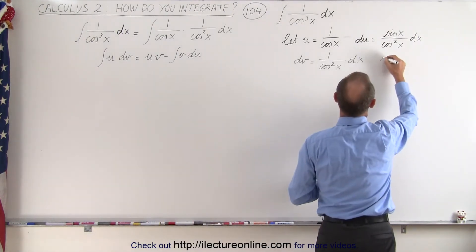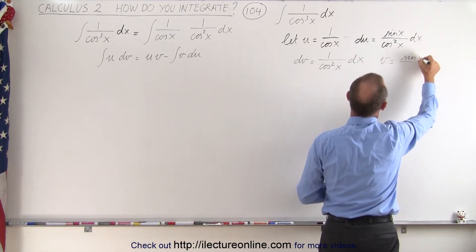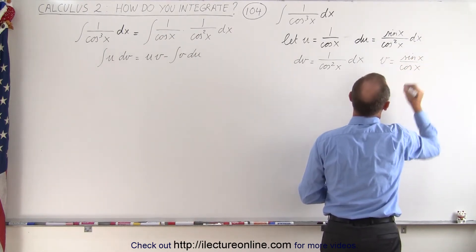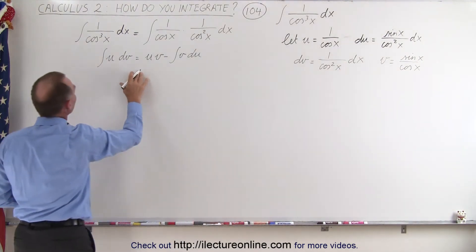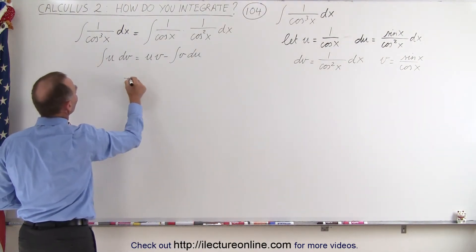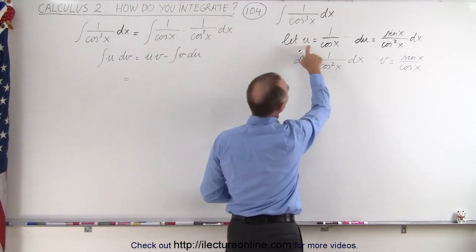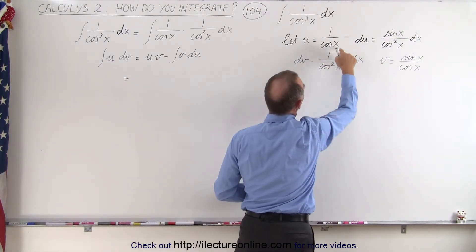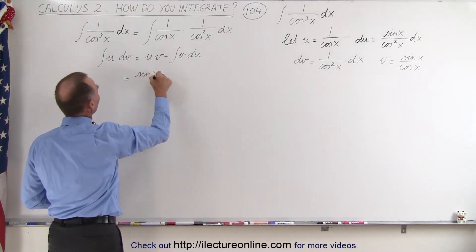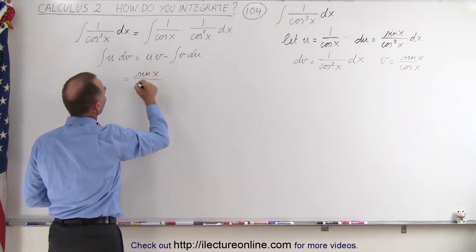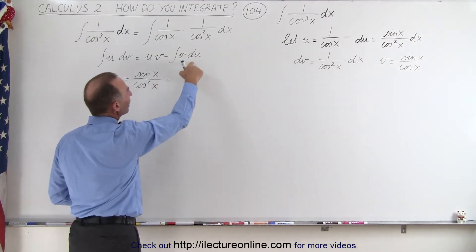Now 1 over the cosine square of x is equal to the secant square of x, and the integral of the secant square of x is equal to the tangent of x. That means that v is equal to the tangent, which is the sine divided by the cosine of x. And then we can plug that in: this is equal to u times v, so that's the sine of x divided by the cosine square of x.